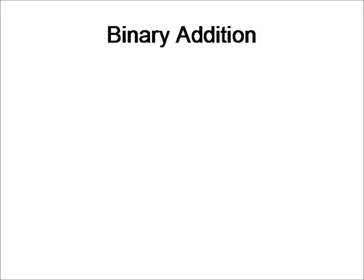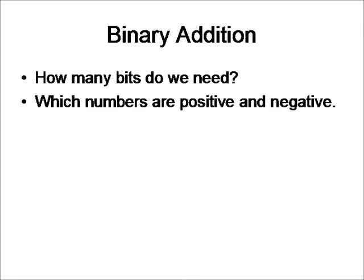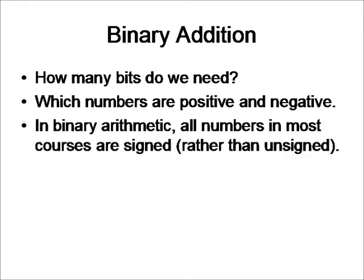Okay so now that we're done with that let's move on to binary addition. In both binary addition and subtraction we need to think of a few things. First we need to think of how many bits that we need in the problem. Next we need to know which numbers are positive and negative. And finally in binary arithmetic we must assume that all numbers, well in most of the courses anyways, are signed rather than unsigned.